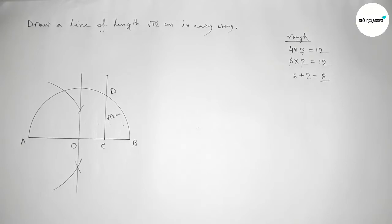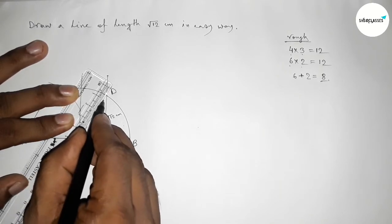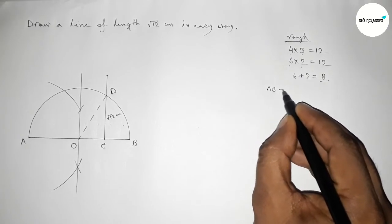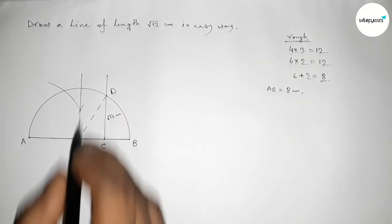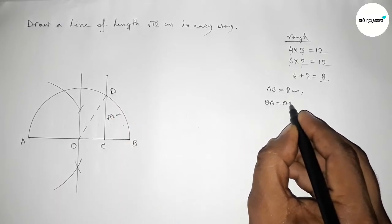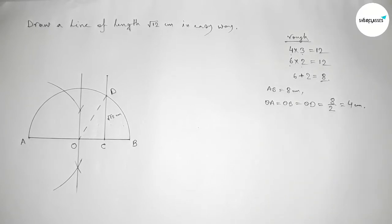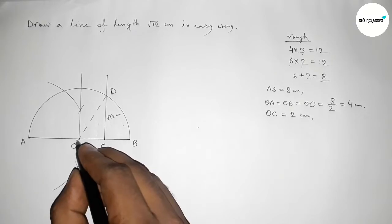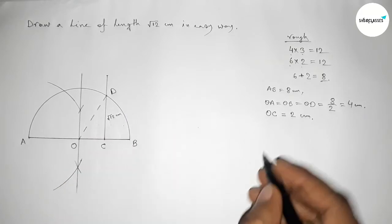Next we prove that CD equals root 12 centimeter. First, joining line OD. Given AB equals 8 centimeter, and OB, OA, and OD are all radii of the semicircle, so all are equal — that is half of 8, which is 4 centimeter. And given OC equals 2 centimeter.